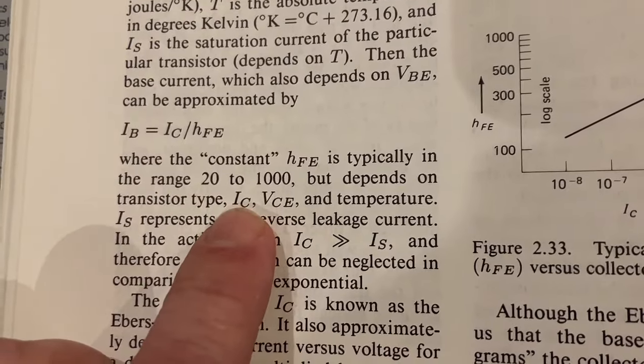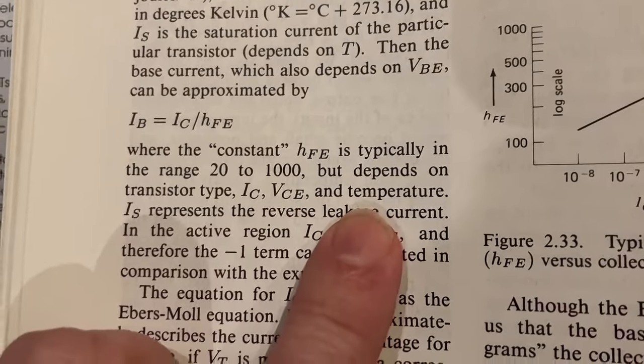HFE, this beta thing, typically is in the range of 20 to 1,000, but depends on transistor type. The collector current, the collector emitter voltage, and temperature.